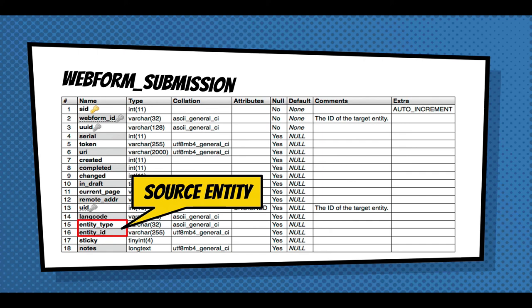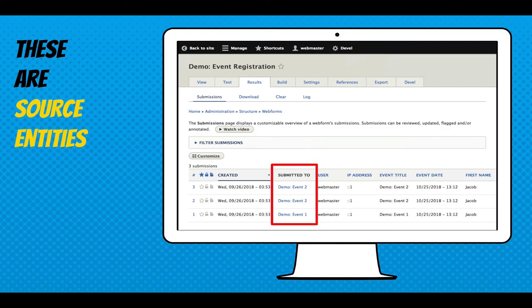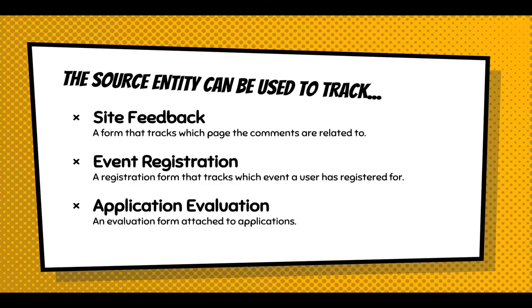Source entities can be used to track site feedback — if you place a webform on every page of your site you'll track submissions on every single page, almost like comments. You can build an event registration system where you create event nodes and attach a registration form to each event node, creating a system that tracks individual registrations per event. You can also build an application evaluation system.